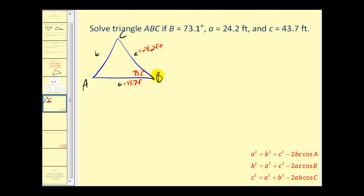The first thing we should notice is that across from angle B is side B. So if we use angle B, the side B will be on the left side of the equal sign. We'll be looking at this form of the law of cosines. B squared must equal A squared plus C squared minus 2 times A times C times the cosine of B, which is 73.1 degrees.